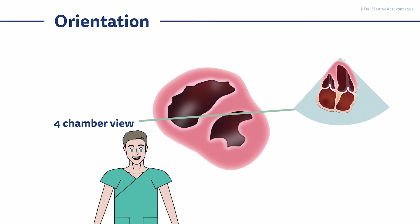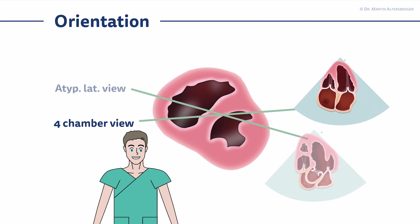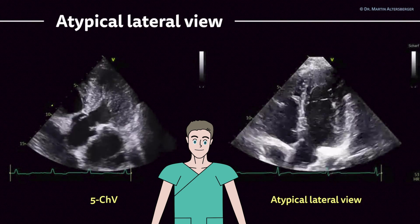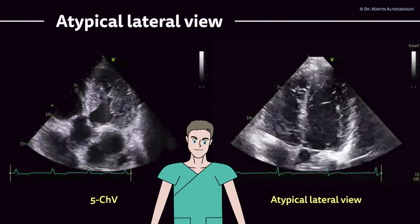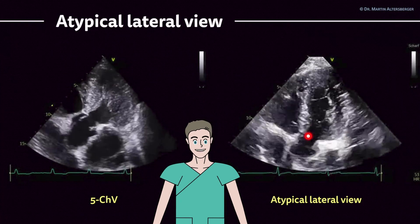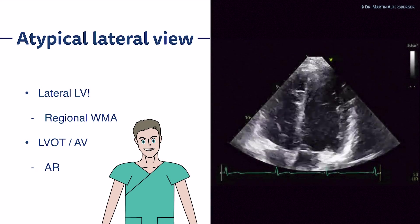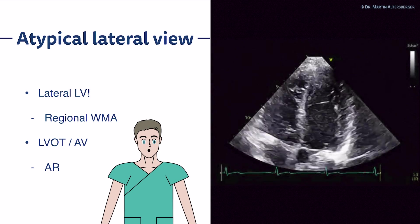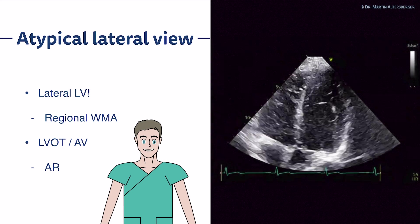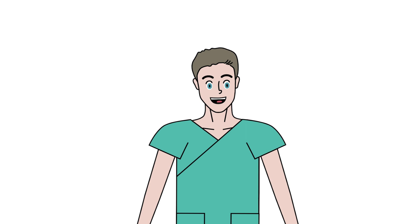For orientation: when we cut through the four-chamber view, both the right and left ventricles are in the field of view. Tilting to the five-chamber view changes the orientation accordingly. You can also rotate the transducer clockwise from the four-chamber view to achieve an atypical lateral view, which looks similar to the five-chamber view but shows different parts of the left ventricular walls. The lateral parts of the left ventricle are nicely displayed, and regional wall-motion abnormalities in this area can only be seen in this view. You also get a glimpse of the LVOT and aortic valve and can quantify aortic regurgitation. This sums up the lecture on the five-chamber view, coronary sinus view, and atypical lateral view.